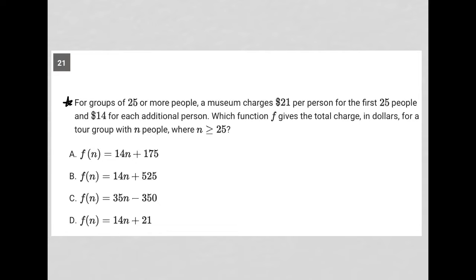So this question says, for groups of 25 or more people, a museum charges $21 per person for the first 25 people. Okay, so 1 to 25 people, you're going to be charged $21 per person. And $14 for each additional person. So 26 plus, you're going to be charged $14 per person.